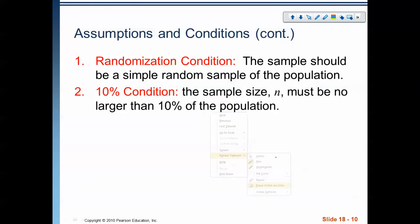Now, the second one, let's erase those, is this condition called the 10% condition. And this one is a little bit strange and often incredibly difficult to check. But what it states is this, that the sample size, n, must be no larger than 10% of the population. So, if my sample size is 50, then that means my population has to be, we have to be able to assume that the population is greater than 500.